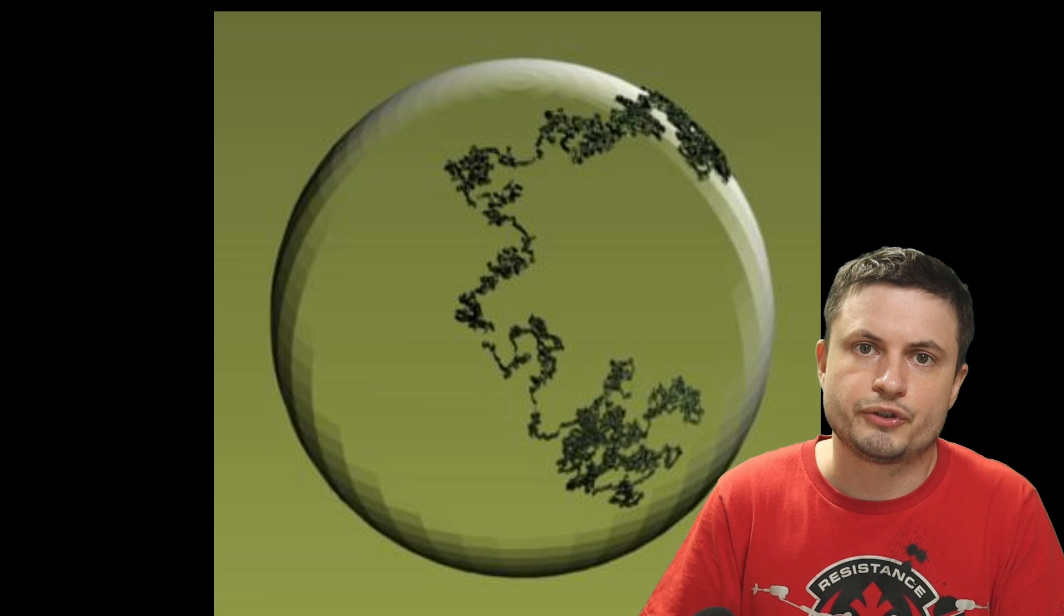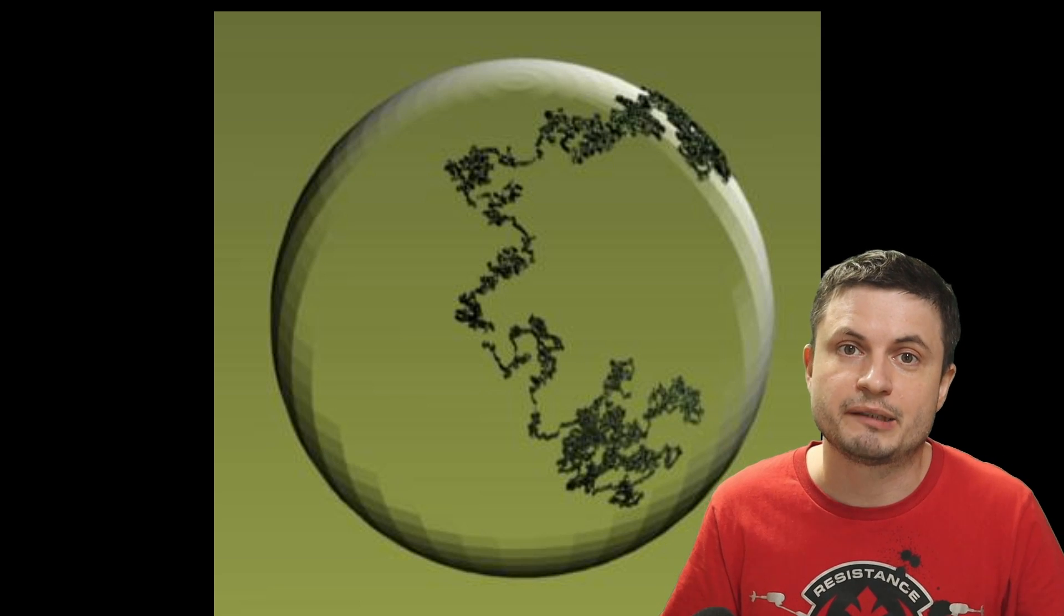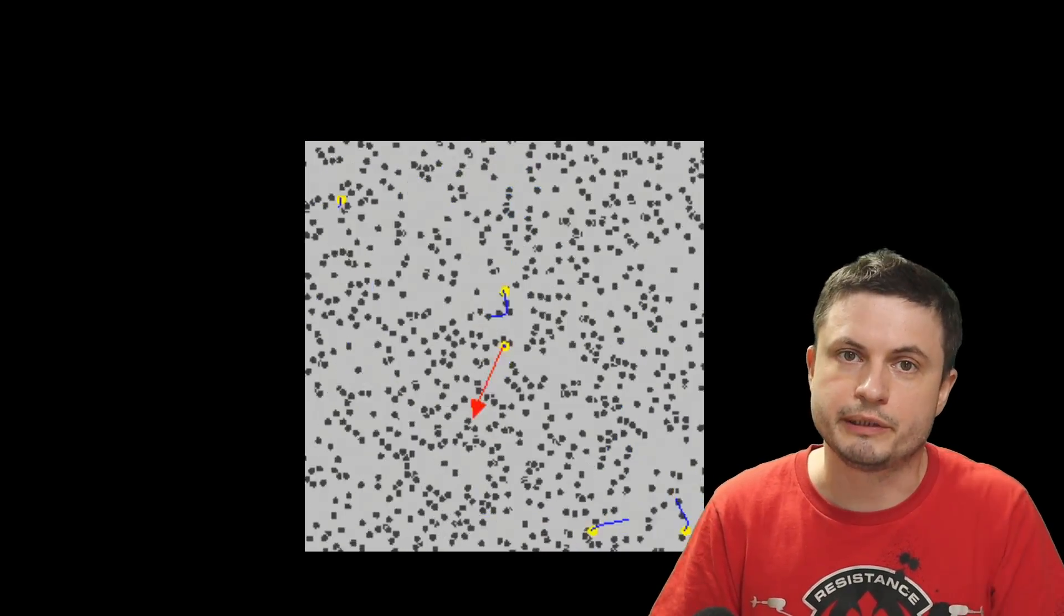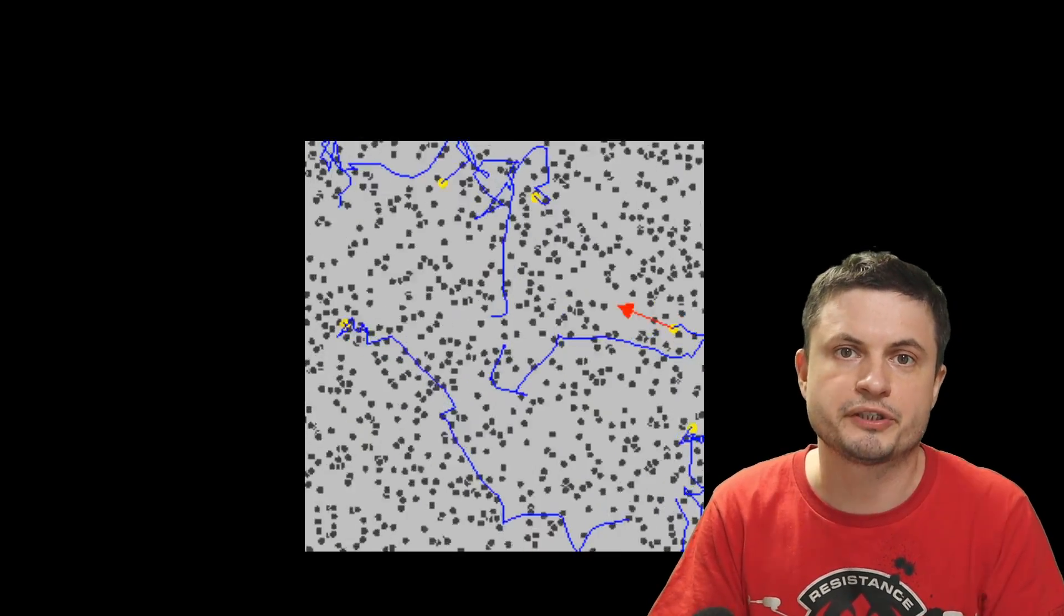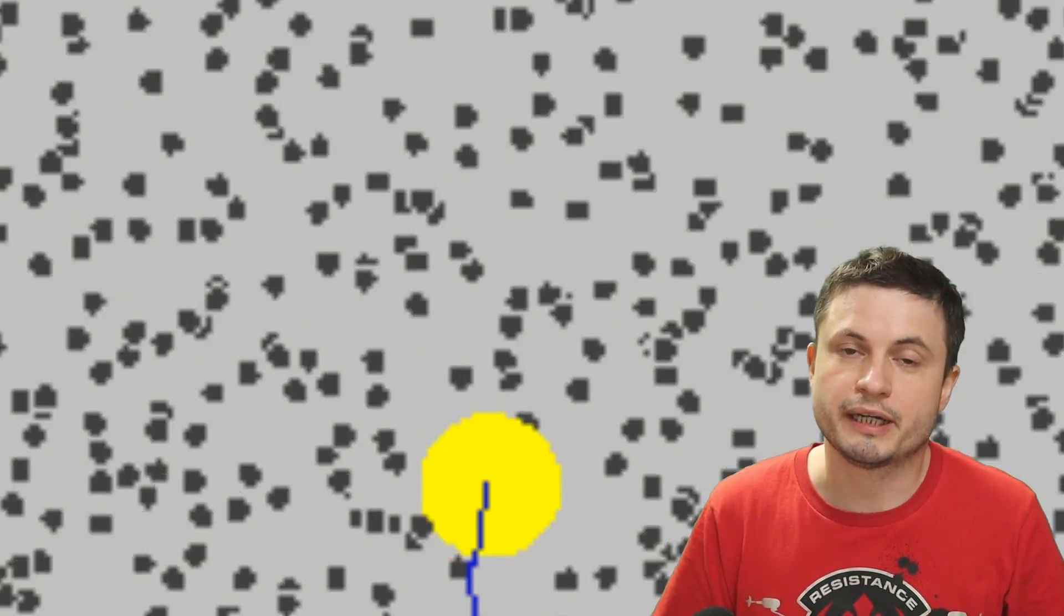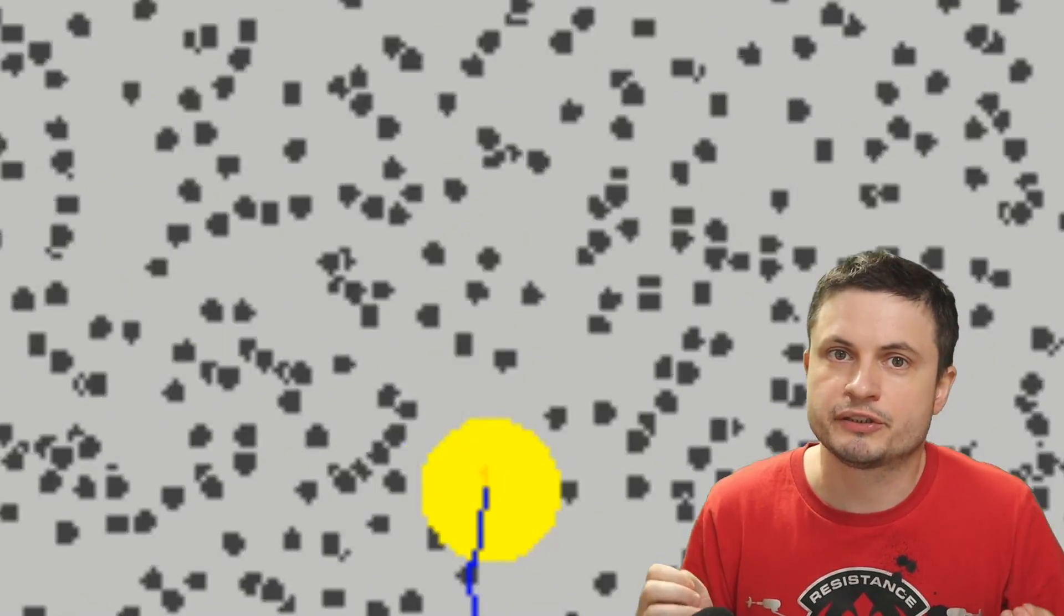If you remember from the chemistry class Brownian motion is defined as this random activity of different atoms and different molecules, which essentially results in a completely impossible to predict motion of particles. Something that for example increases as you increase temperature and decreases as the temperature drops closer and closer to absolute zero.